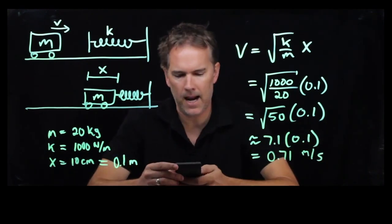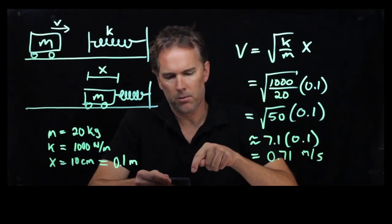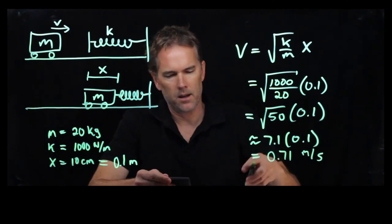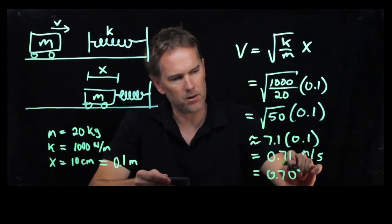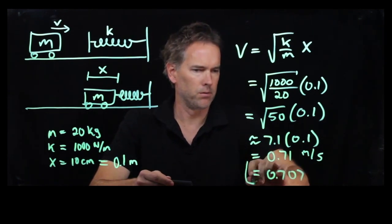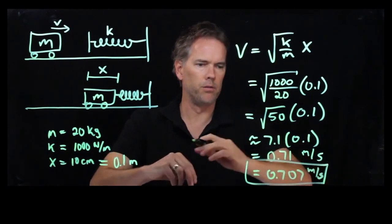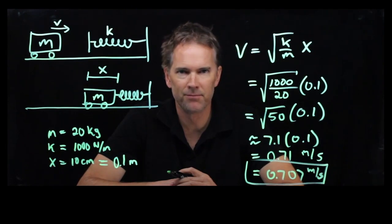Let's just try it with our calculator and double check. 50 square root times 0.1 is 0.707. So our guess was nearly right on the money, meters per second. Hopefully that's clear. Cheers!